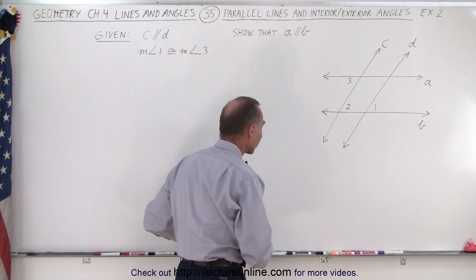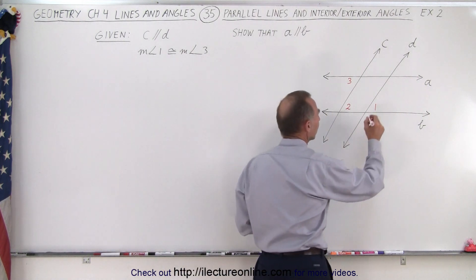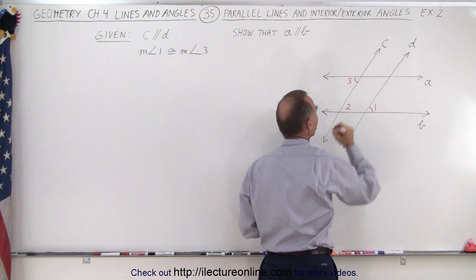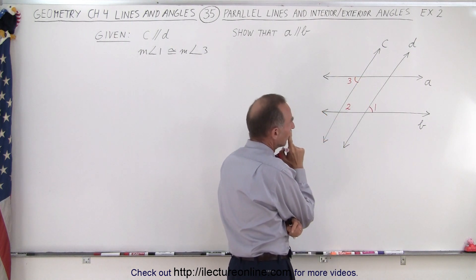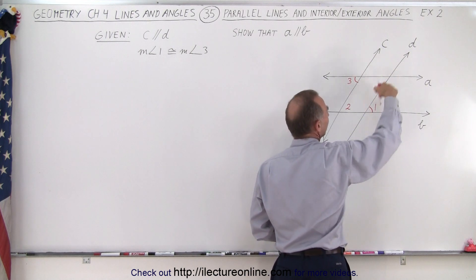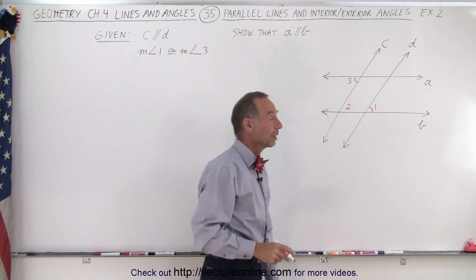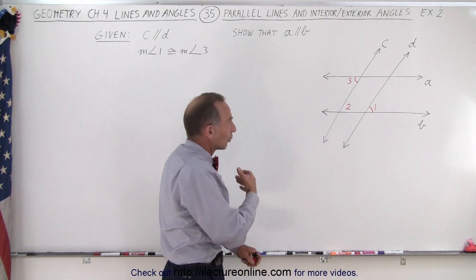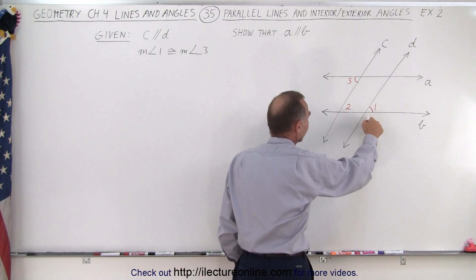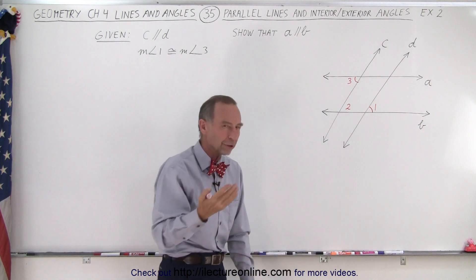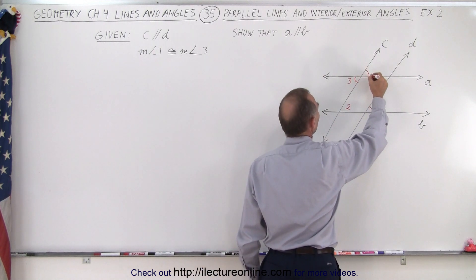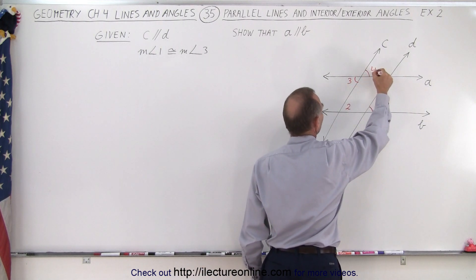First, let's mark what we have. We can see that this angle is congruent to this angle over there. I need to find information about these angles in order to determine if A and B are parallel, because I don't know anything about angle two. But I realize that vertical angles are congruent, which means that this angle here is congruent to this angle right there. Let's call that angle four.